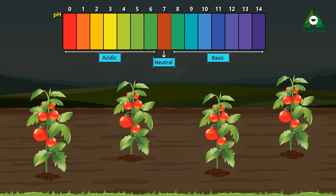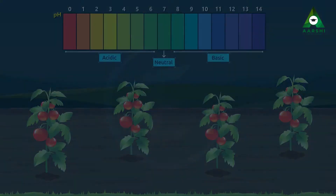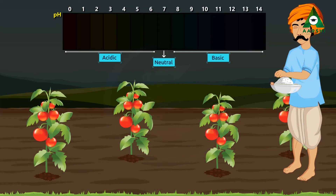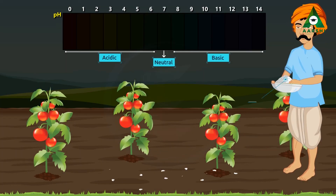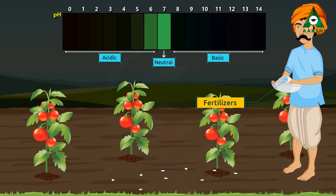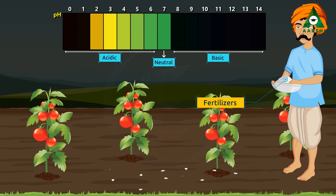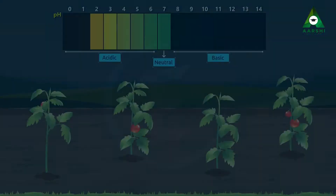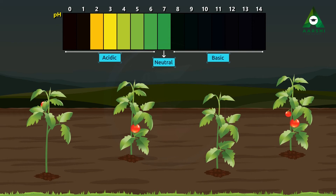Often wrong harvesting and use of excess fertilizers increase or decrease the pH of soil from normal. This affects the growth of plants, which results in lower yield.